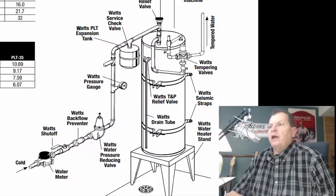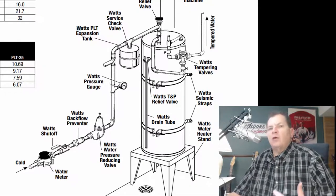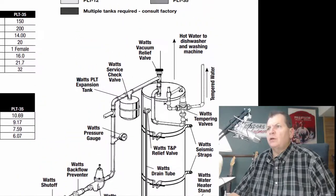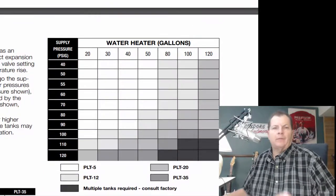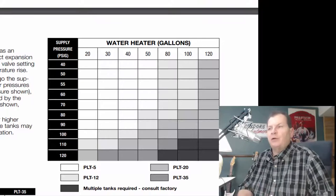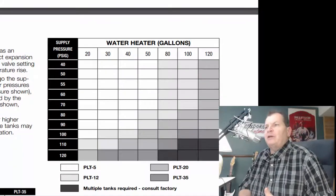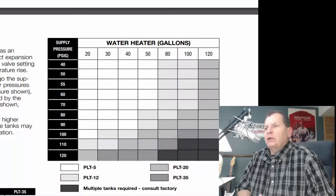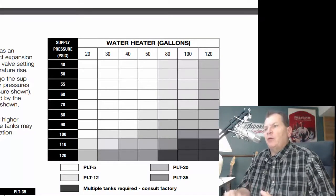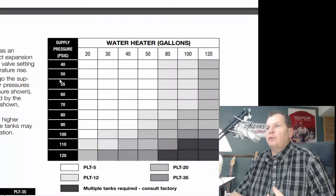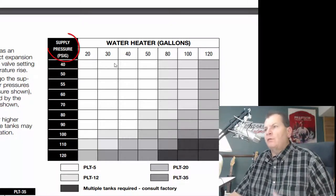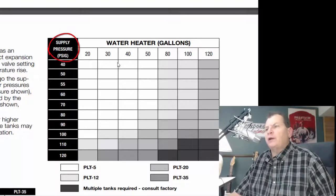So here let's go to our handy-dandy screen. So you know what expansion tank you're supposed to have. For sizing. For a domestic system, and when I'm talking domestic system, that means you're drinking water. That's your domestic. It's supposed to be whatever your supply pressure is at. That's the incoming pressure from your water main versus the size of your water heater.